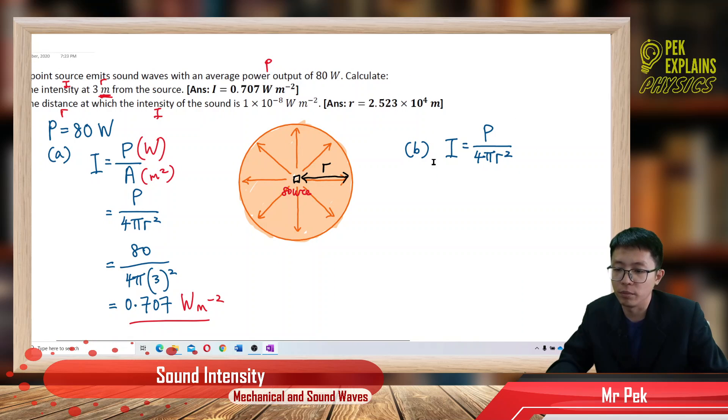Again, you use the formula. I equals power over area. Area is a sphere, 4πR². So just put your intensity there, 1×10⁻⁸.